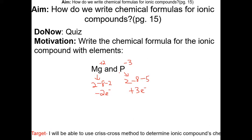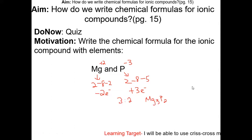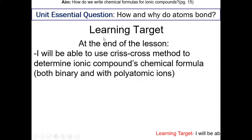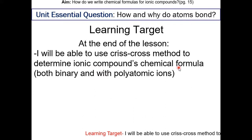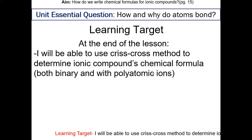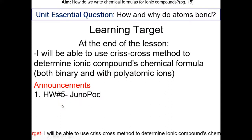If you're good at working backwards with ratios, it is called the crisscross method, and I'll show you in this lesson. Learning target: at the end of the lesson, I'll be able to use the crisscross method to determine an ionic compound's chemical formula, both binary and with polyatomic ions. For homework, it will be number 5, and it will be a Junipod based off this lesson.